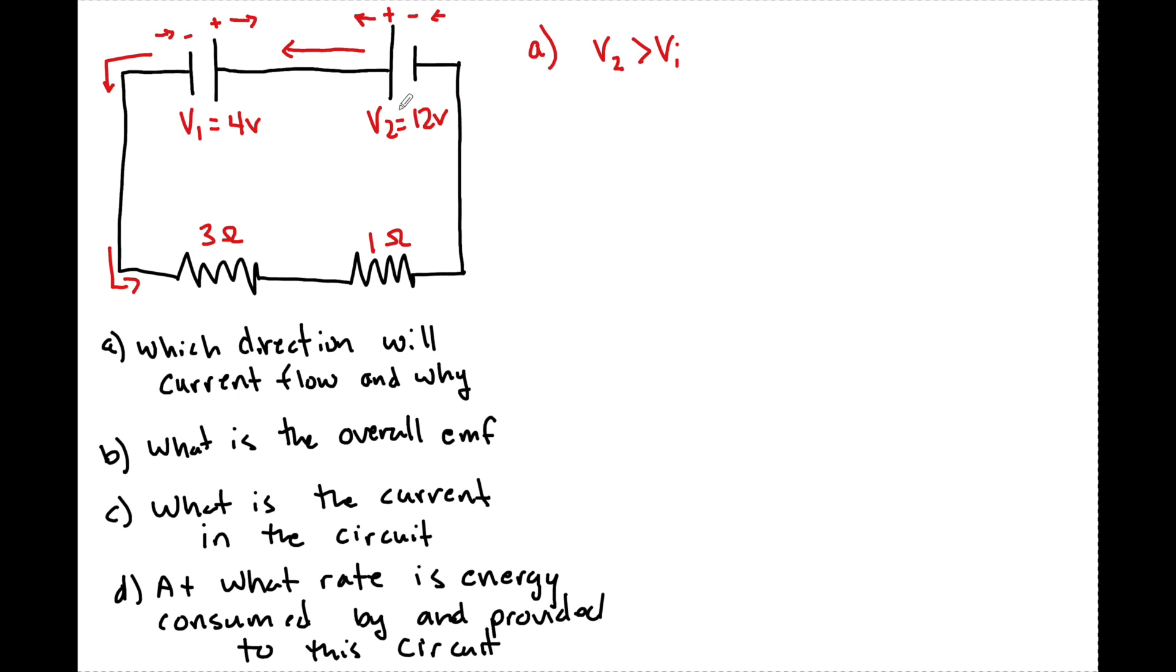So that electromotive force is going to overpower this battery and the current is going to flow like so. So it's very simple. This is kind of like a net force situation. This one is stronger than this one, so it's going to overpower it and the current is going to travel in this direction.